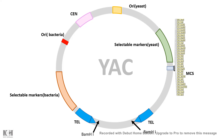Yeast Artificial Chromosome is a cloning vector, and it is specially used to clone big DNA fragments — as large as several megabase pairs.